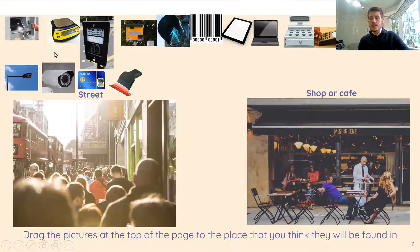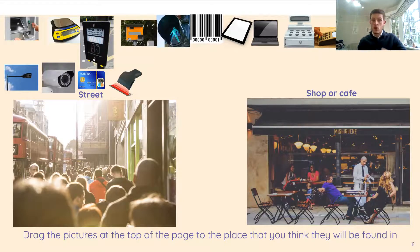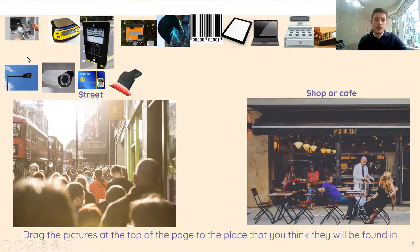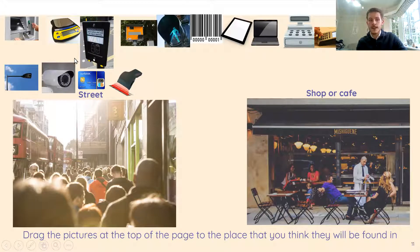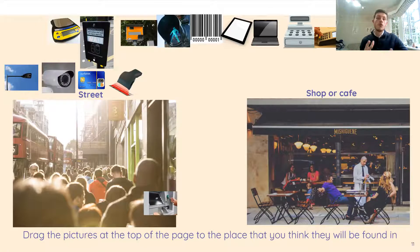The ATM — these are all computers, all things where you'll find computers in them, or they're using computers to send information out. Something like the ATM machine where you go and get out money — is that going to be found in the street or at a shop or a cafe? You'd find it in the street. You go up to it, put in your card, take out some money and walk off. You don't need to go into a shop to get one.